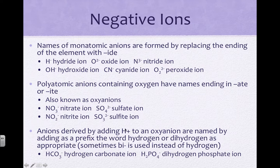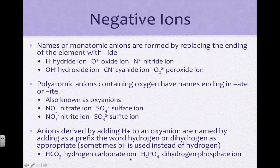Anions that have an H added can use 'hydrogen' or 'dihydrogen' depending on how many are added, and sometimes 'bi-' is used instead. For example, CO3²⁻ is carbonate, but if you add H+, it becomes hydrogen carbonate or bicarbonate. Phosphate is PO4³⁻; HPO4²⁻ is hydrogen phosphate, and H2PO4⁻ is dihydrogen phosphate. These are on your ion list, so this is kind of a review.